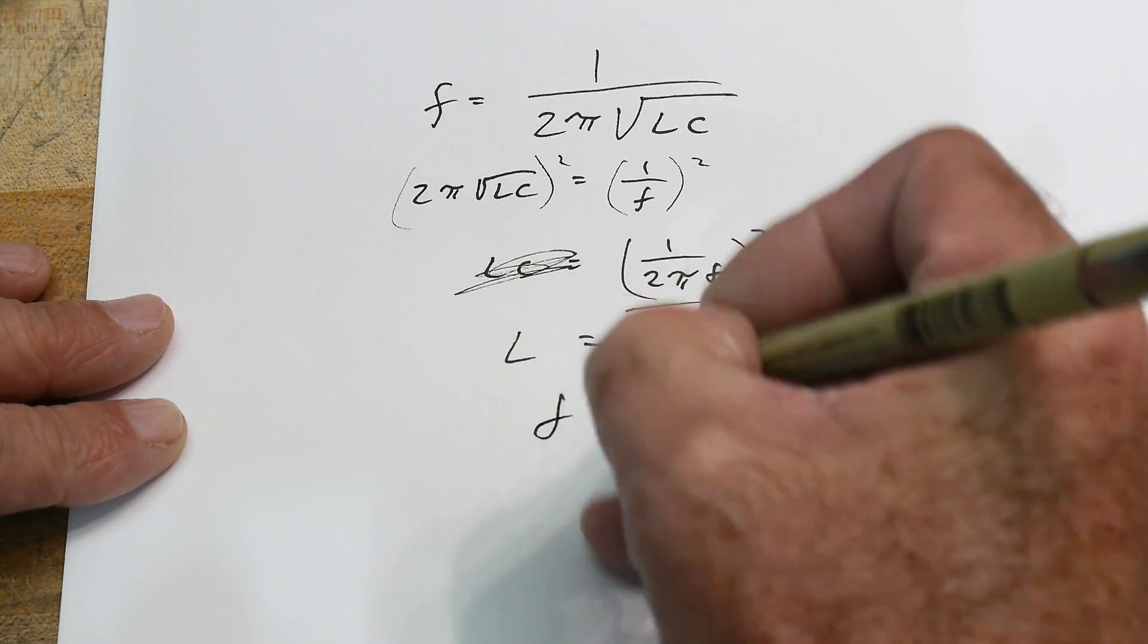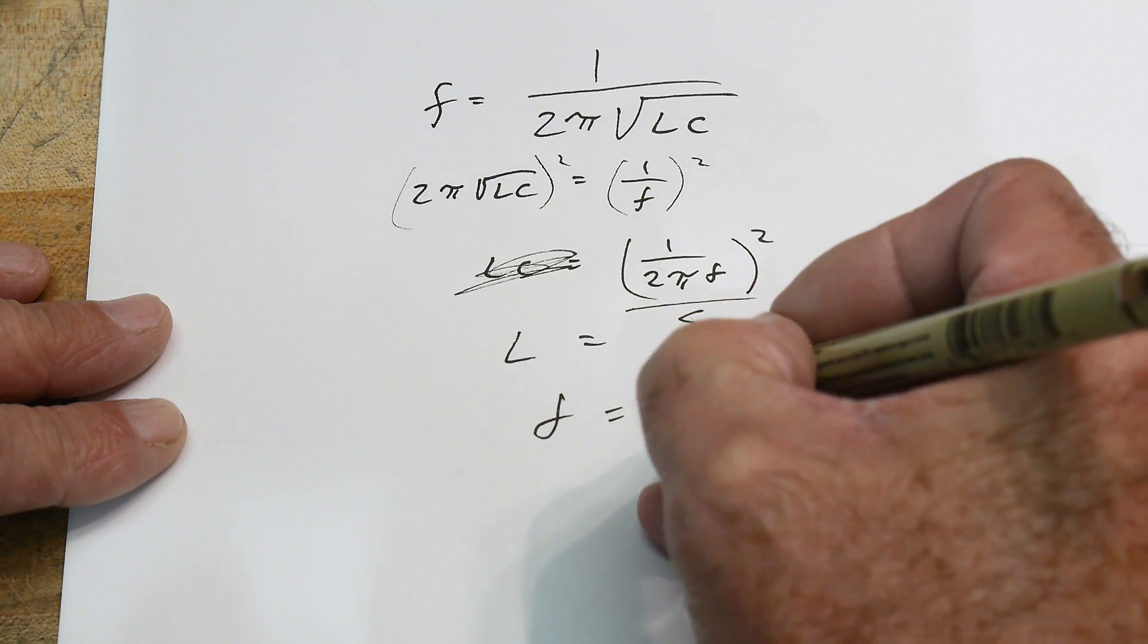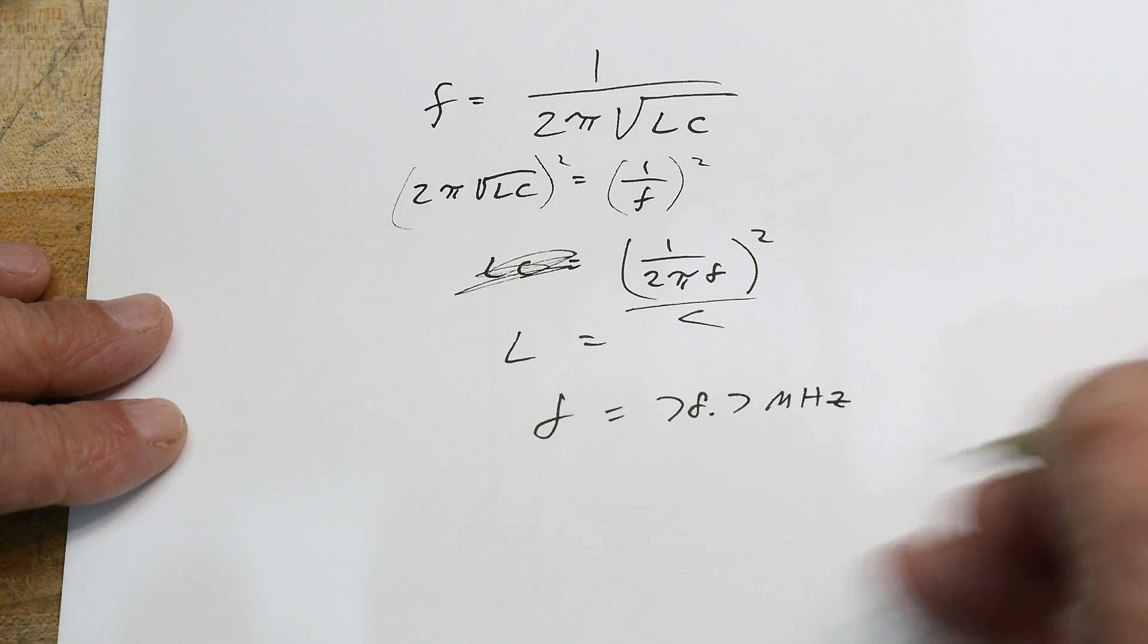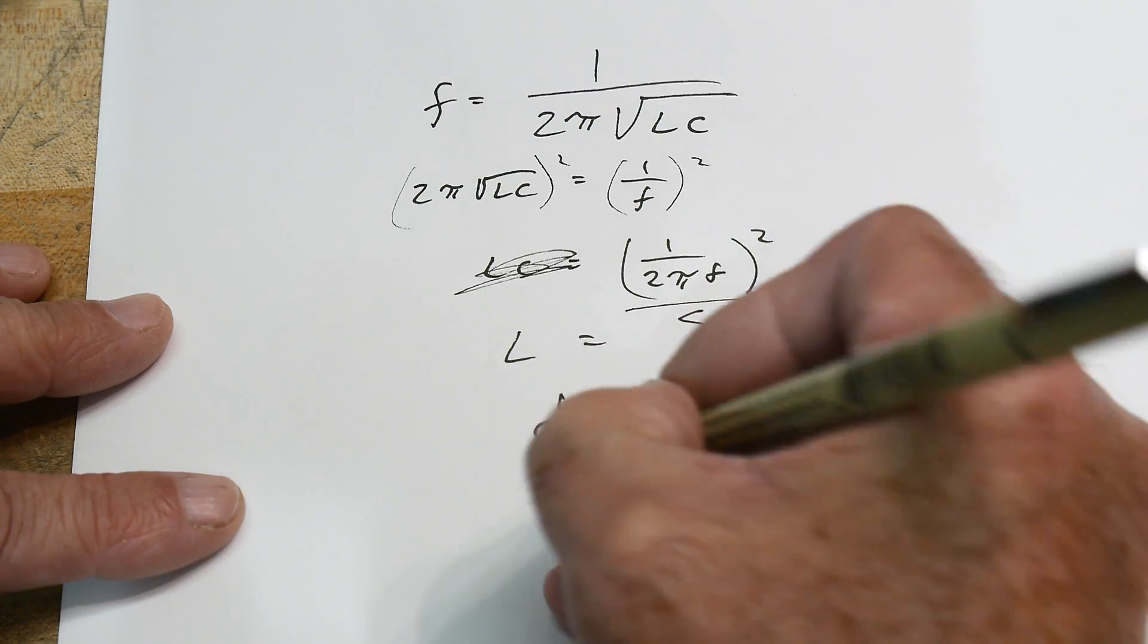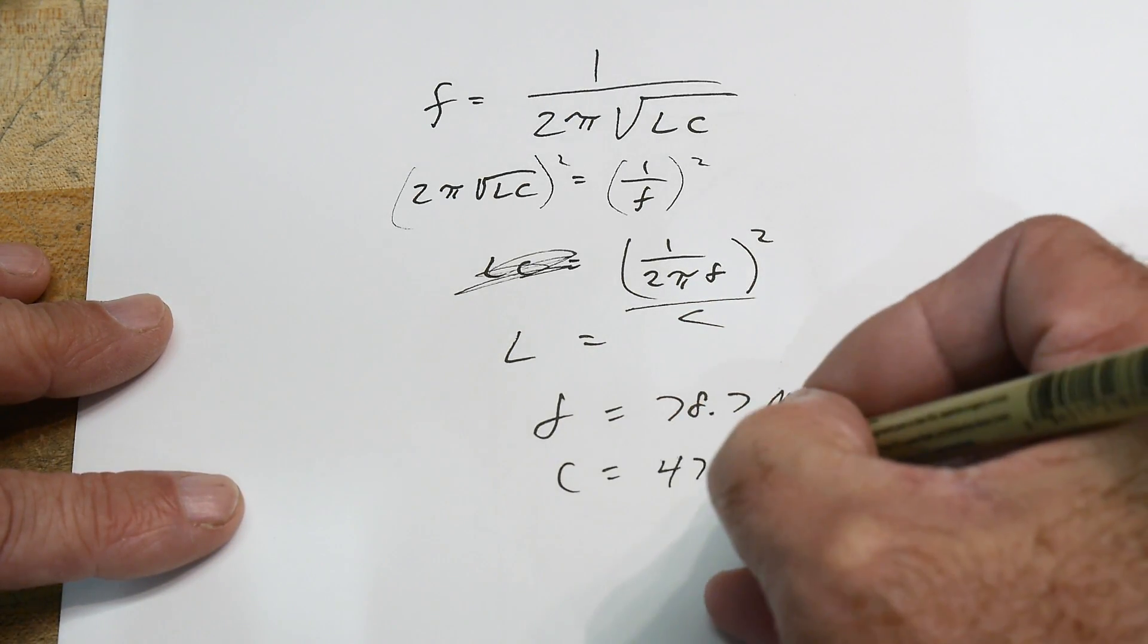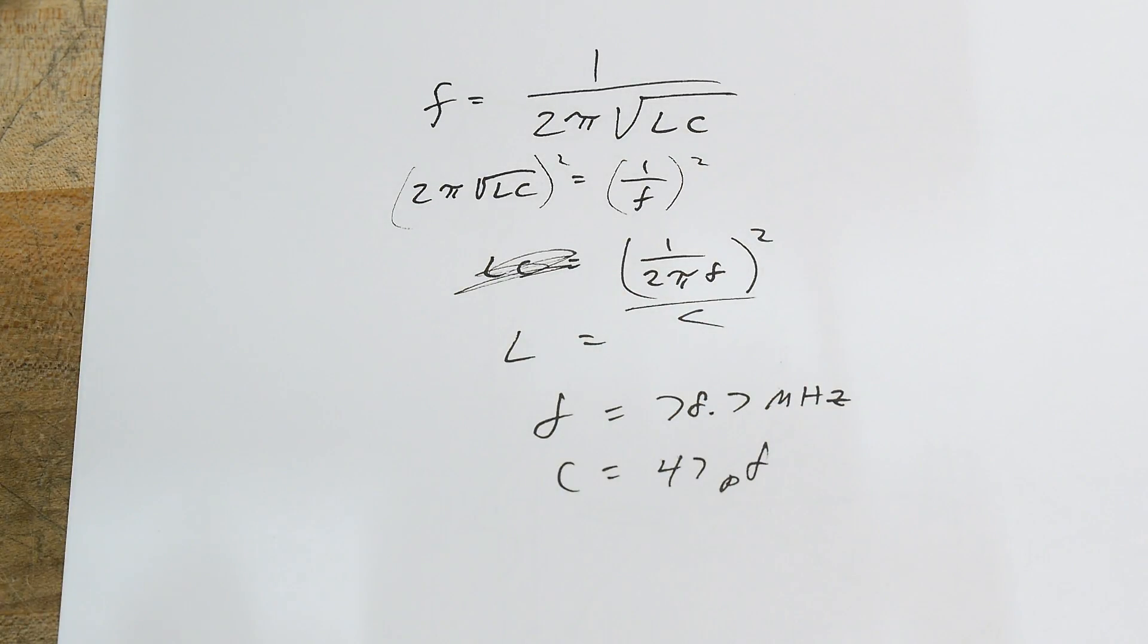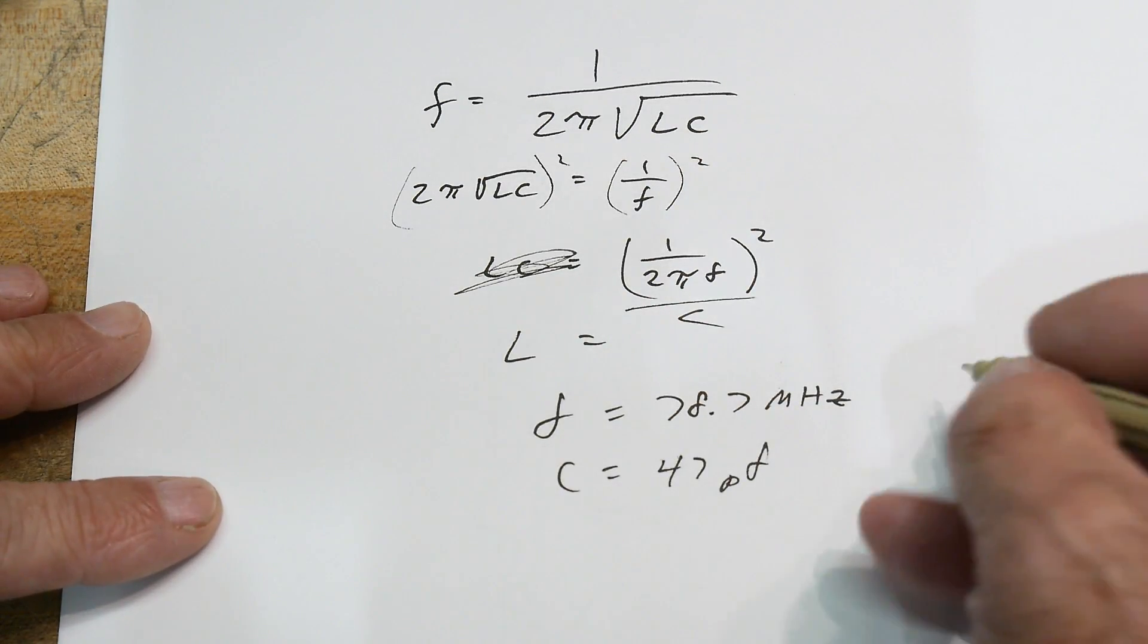So what do we know? We know our frequency is 78.7 megahertz. And we know that our C was 47 picofarads. Okay, when you use these formulas you have to make sure you understand the units. So we need this in Hertz, so this is equal to 78.7 e to the 6 Hertz.